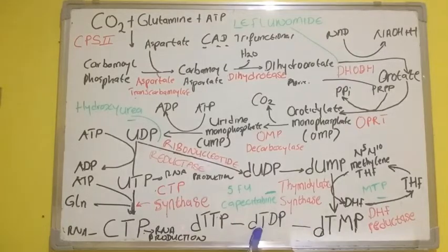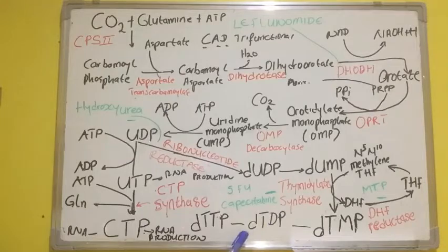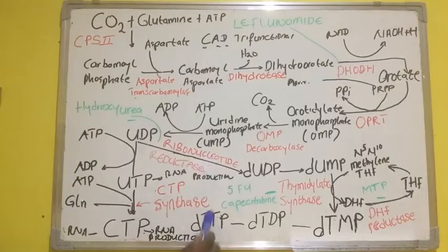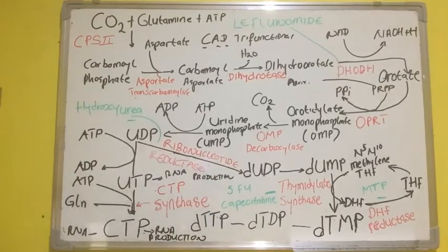dTMP is then converted to dTDP, and dTDP is converted to dTTP. From there, it enters DNA production.